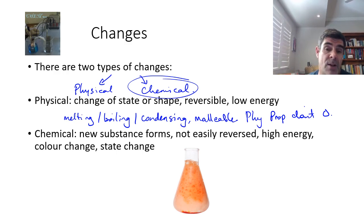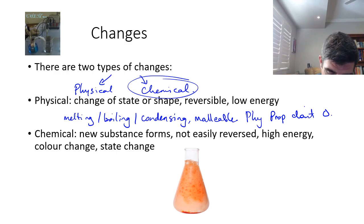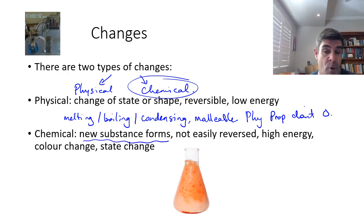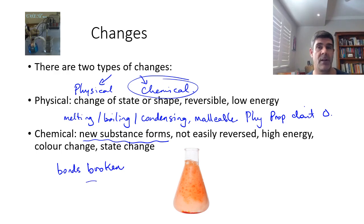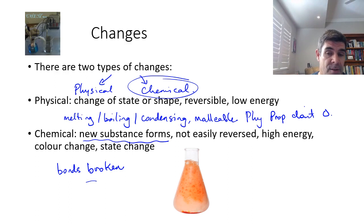So chemical change on the other hand is where we have a new substance forming. So we have to have bonds being broken and these are always chemical bonds which must be broken. It's possible that we can have physical forces, hydrogen bonding, van der Waals forces or dispersion forces or dipole-dipole interactions that are actually breaking in our change of state.